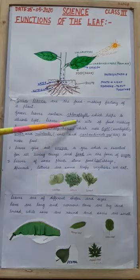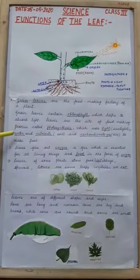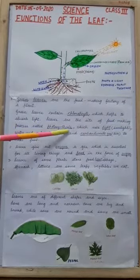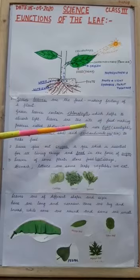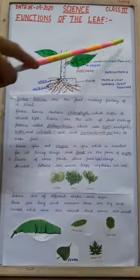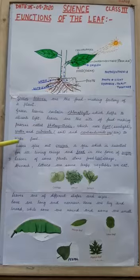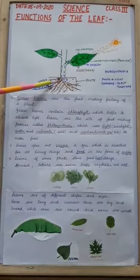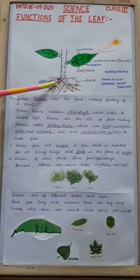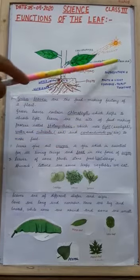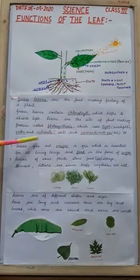Leaves are the site of food making process called photosynthesis, which uses light from sunlight, water and nutrients absorbed from the soil, and carbon dioxide from air to make food.